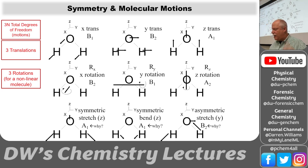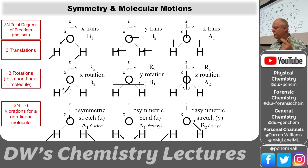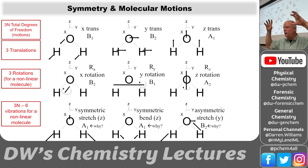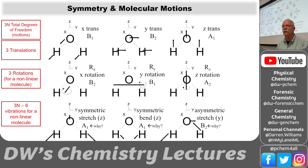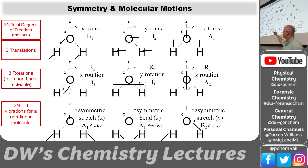If it's not a translation and it's not a rotation, by definition it's a vibration. The number of vibrations is always 3N total degrees of freedom minus the rotations and translations — that's the minus-six part. In water's case, nine minus six is three, so here are the three vibrations in water.